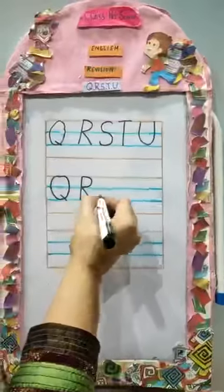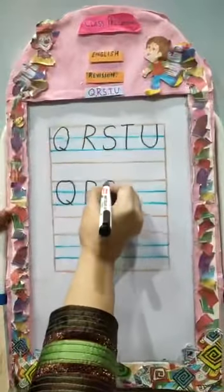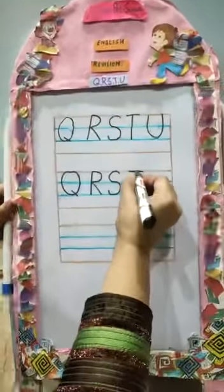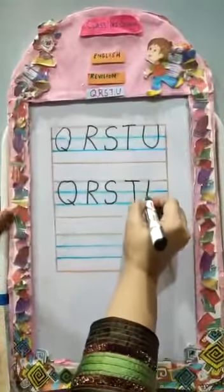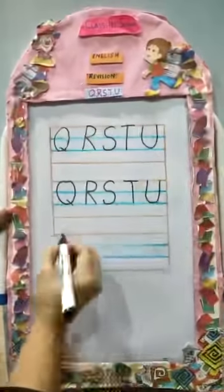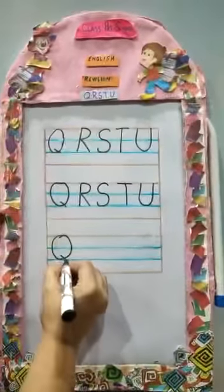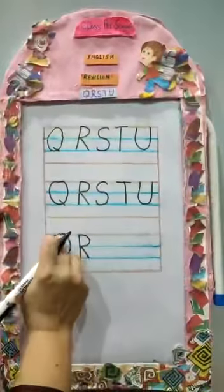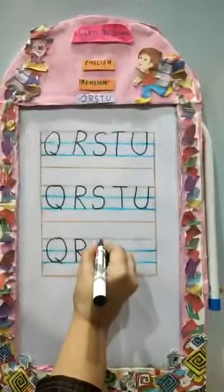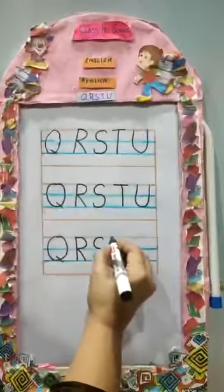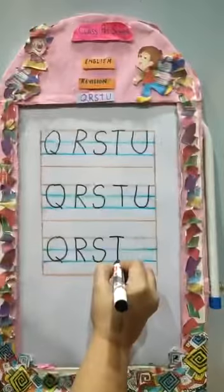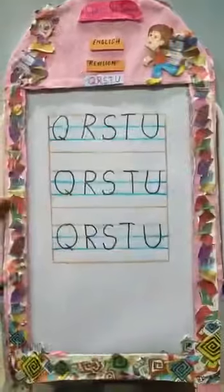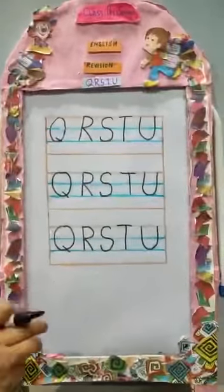Children, you have already done these alphabets — we are just revising them and writing them in sequence: Q, R, S, T and U. Q for Queen, Quilt. R for Rain, Ring. S for Sun, Snow. T for Tree, Top. And U for Umbrella or Urn.